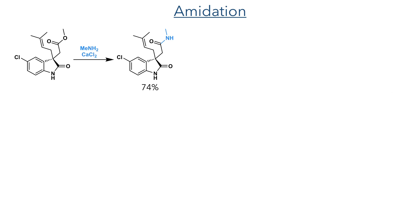Taking this compound forward, the ester was converted to a methyl amide by reacting it in methanol with methylamine and calcium chloride, generating the target amide in a 74% yield.